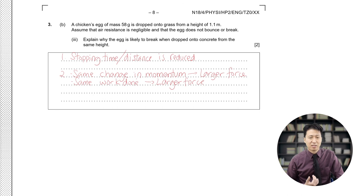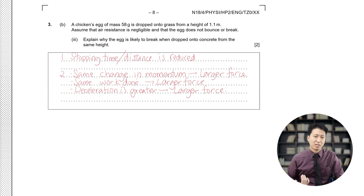They will also accept that if you use the same distance or if the distance is reduced and the same work, that means that the amount of force is increased. A third option is the deceleration is greater because a smaller stopping time is required and this means that a larger force is required to decelerate this egg.